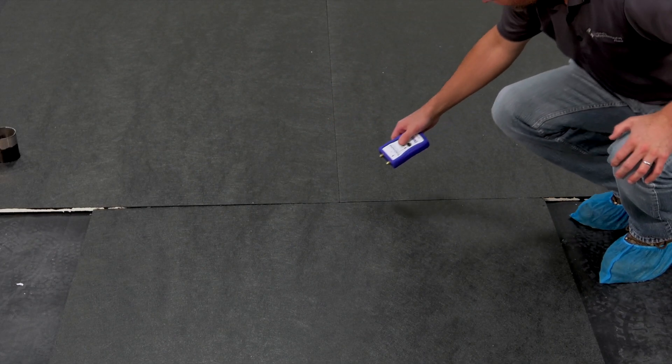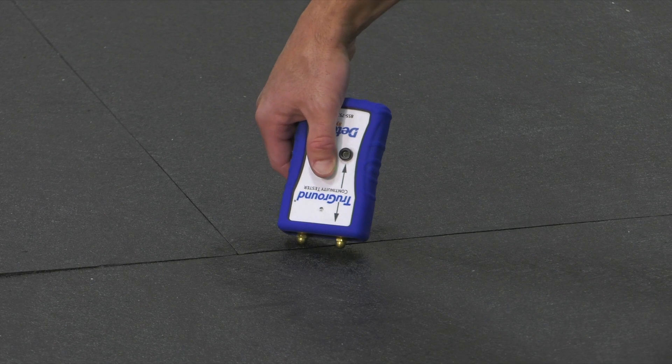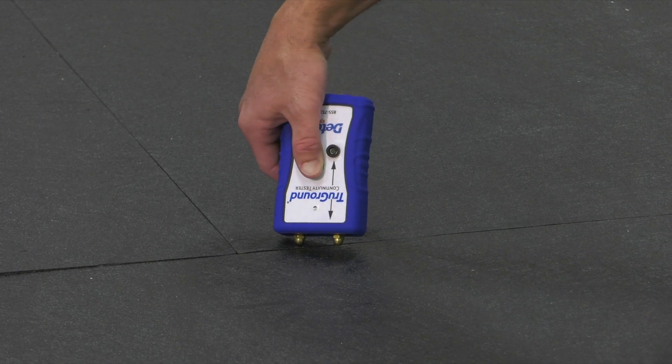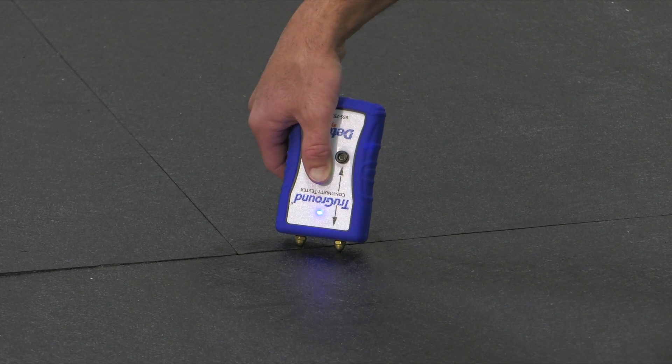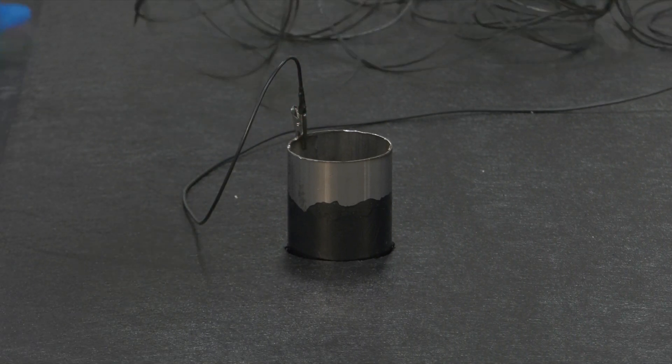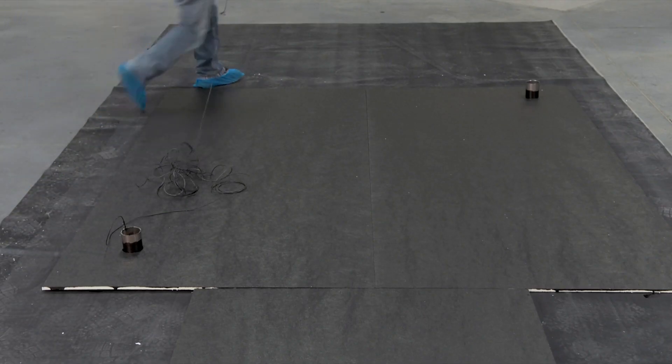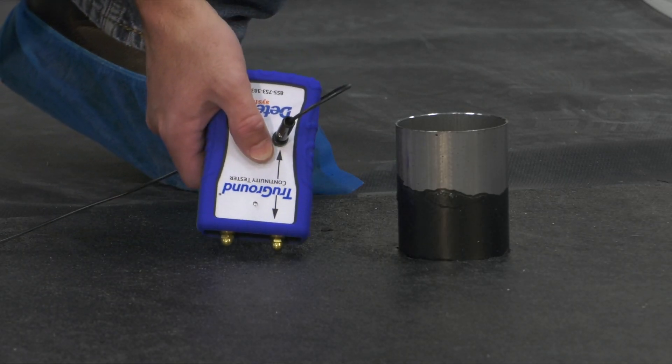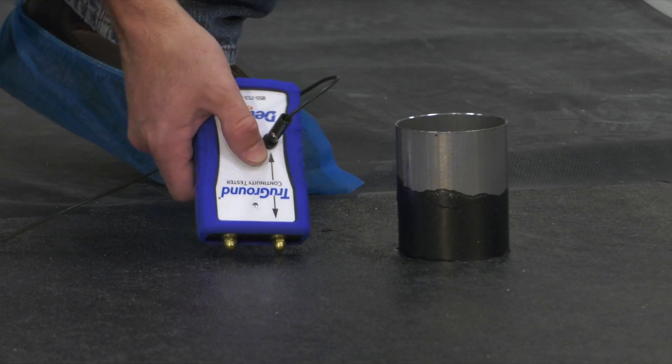Once dry, continuity between board joints and at ground connections must be tested using the available True Ground continuity tester. After True Ground is dry and continuity is confirmed, membrane installation can continue as normal using any required and approved fasteners, adhesives, or primers.